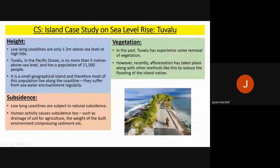Another case study for this section is sea level rise in Tuvalu. Tuvalu is in the Pacific Ocean and is no more than one to two meters above sea level across the whole island, with a population of only 11,500 people. Most people live along the coastline, so they suffer from seawater flooding very regularly. Subsidence also occurs naturally on low-lying islands like Tuvalu — too much human activity on the landscape creates weight pressure on the sand, and drainage for agriculture and the weight of the built environment further compress sediments, all leading to subsidence.